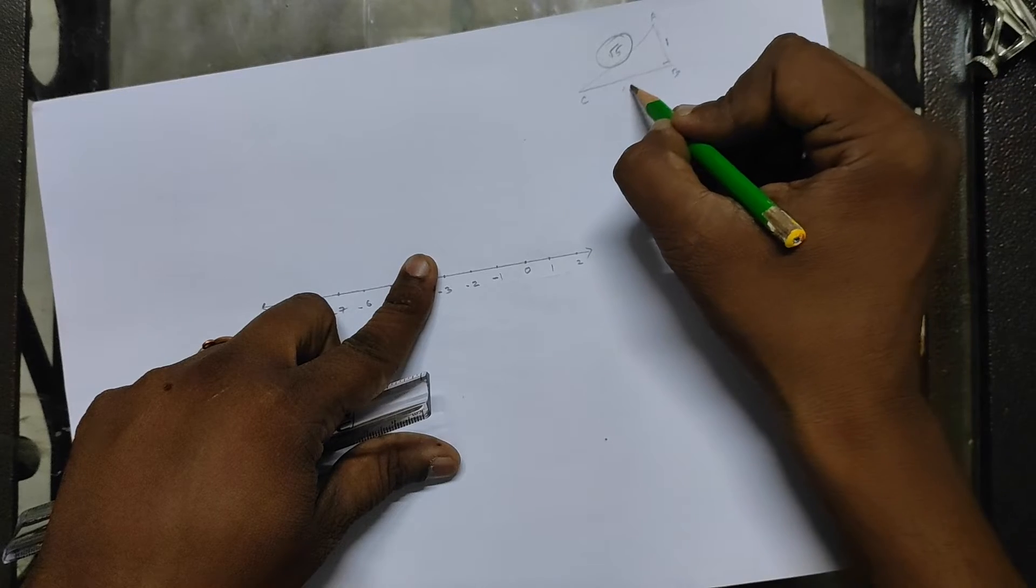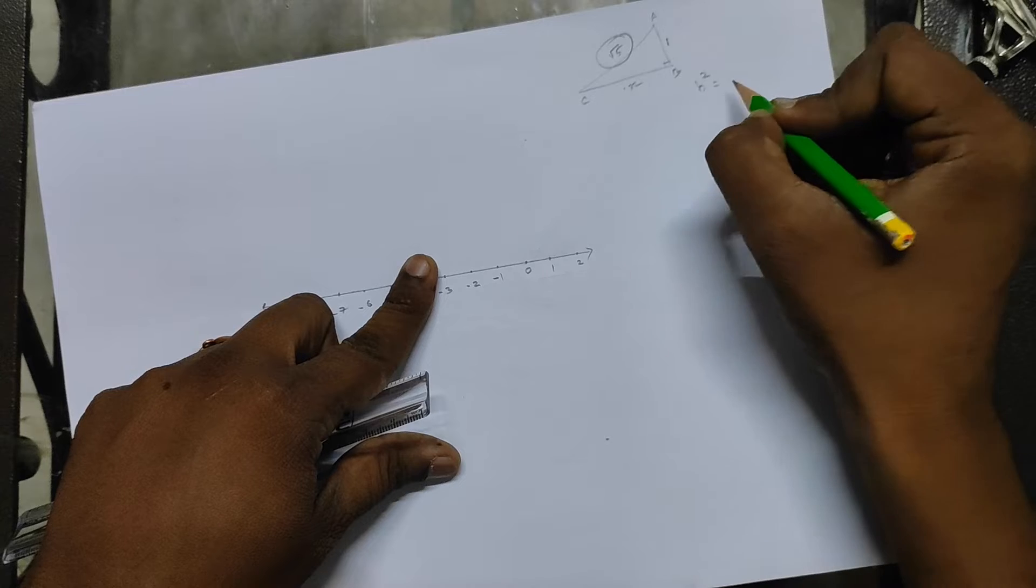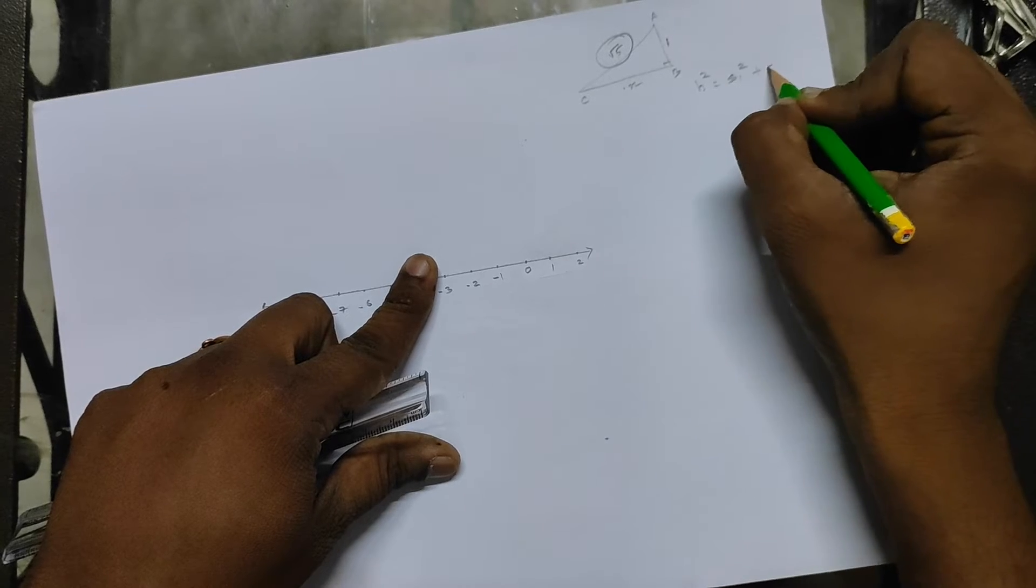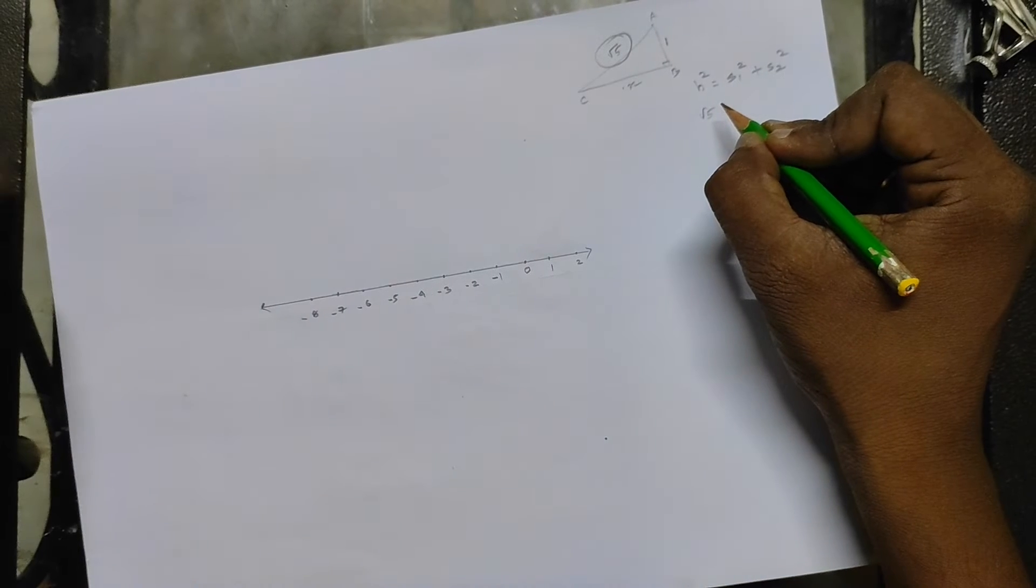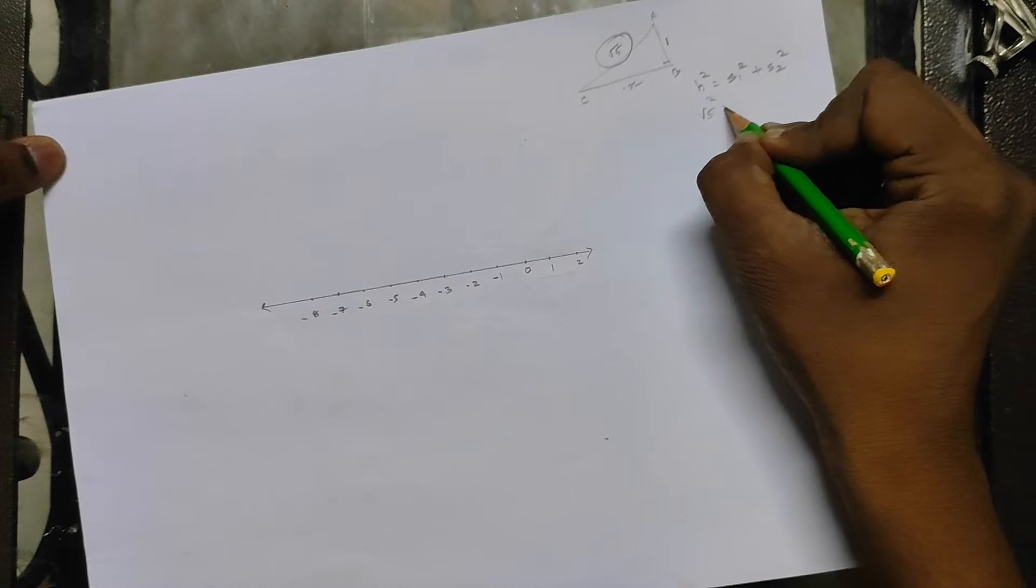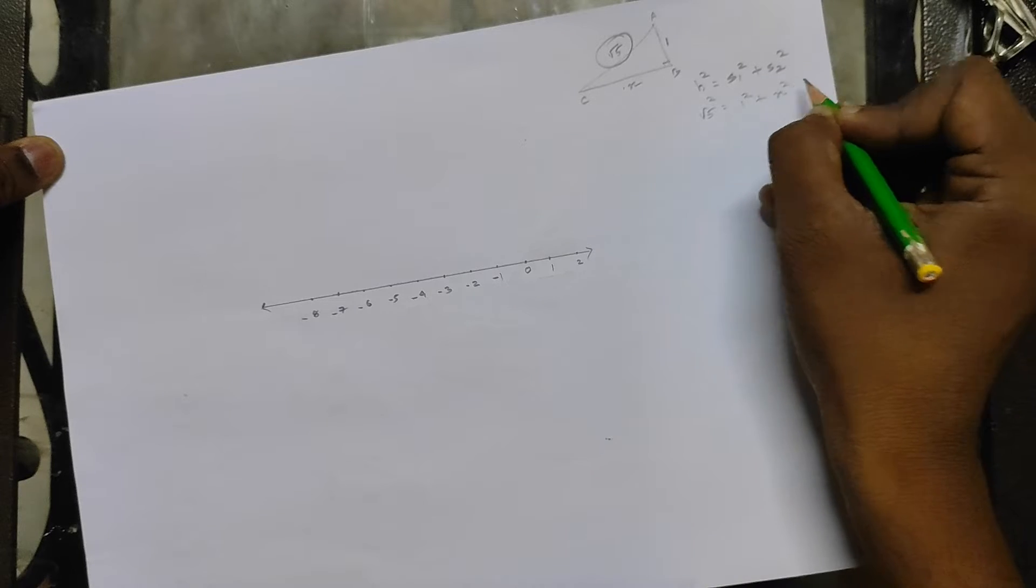Same formula: hypotenuse square is equal to side one square plus side two square. This time I'm going to take the hypotenuse as root 5. So root 5 square is equal to - side one is one and the other one is x square.